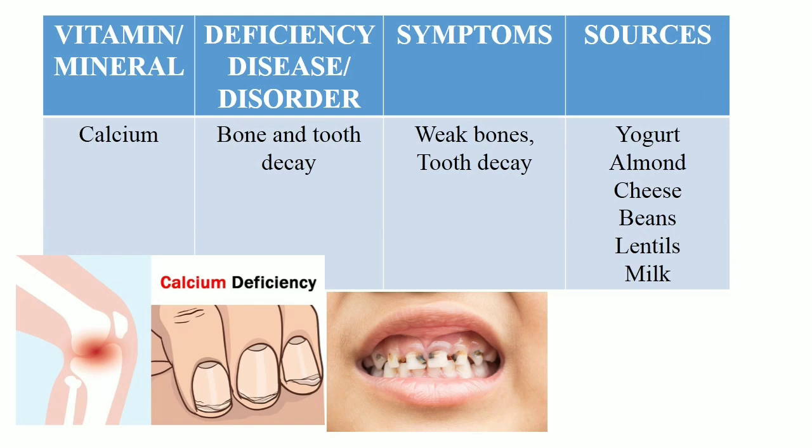Mineral deficiency — Calcium: Calcium is important for strong teeth and bones. If there is deficiency of calcium in the diet, it may lead to weak bones and tooth decay. The person should consume food rich in calcium. Good sources include yogurt, almond, cheese, beans, lentils and milk.